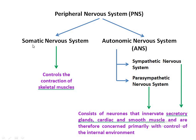The peripheral nervous system is again divided into two parts. Number one is the somatic nervous system, responsible for controlling the contraction of skeletal muscles — that is, for generating impulses so that skeletal muscles can contract voluntarily. Number two is the autonomic nervous system, consisting of part of the peripheral nervous system responsible for generation of autonomic control of different organs.